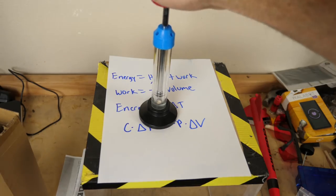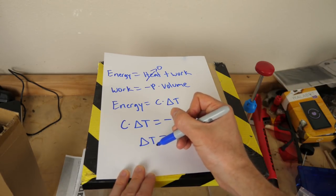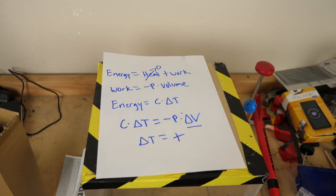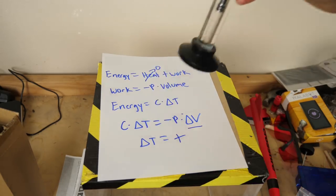And so when we hit this down, this change in volume is negative. So basically we get that the change in temperature is some positive number, so an increase in temperature. So that's an easy proof of why when you decrease the volume, the temperature goes up in a system.